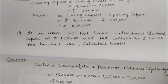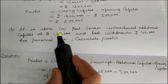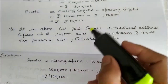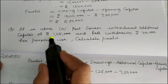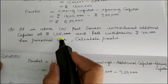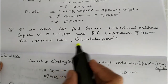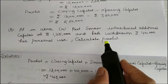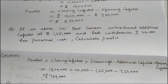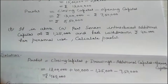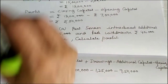The next illustration: if in the above question, Sonam introduced additional capital of 1,25,000 and had withdrawn 40,000 for personal use, calculate the profit. All other things remain the same — opening capital is 7,50,000, loan is 2,00,000, and assets are 15,00,000.